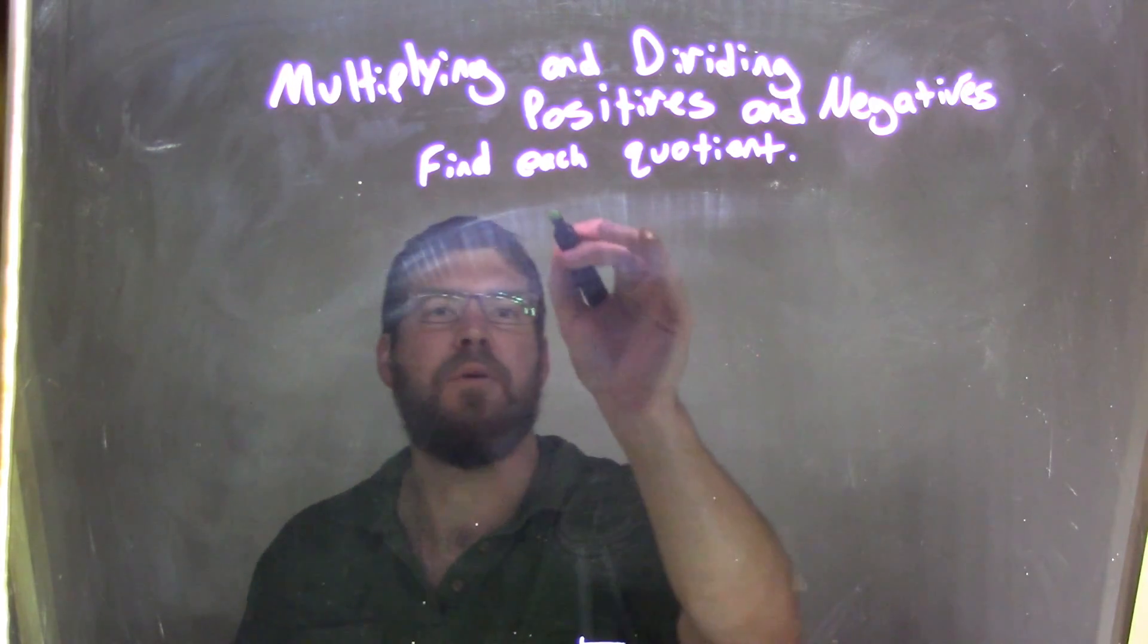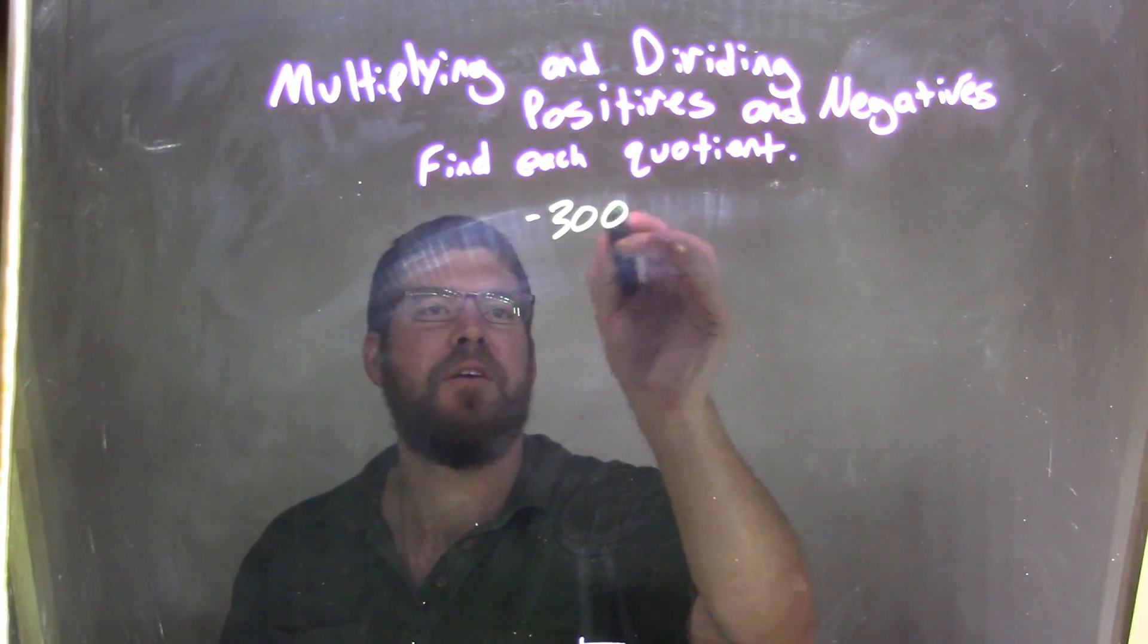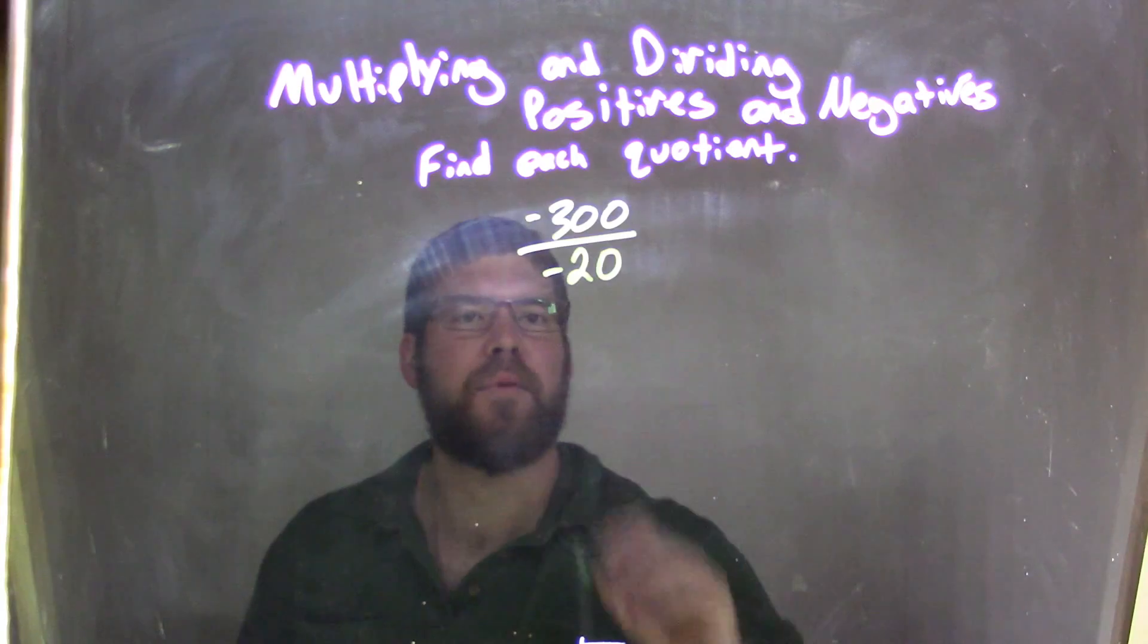So, if I was given this quotient, negative 300 over negative 20, okay?